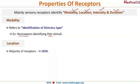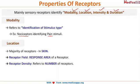The second property is location. The majority of receptors are located in the skin. Two important terms here are receptor field and receptor density. Receptor field is the specific area in which a receptor responds — the response area of a receptor. Receptor density is the number of receptors in a given area.